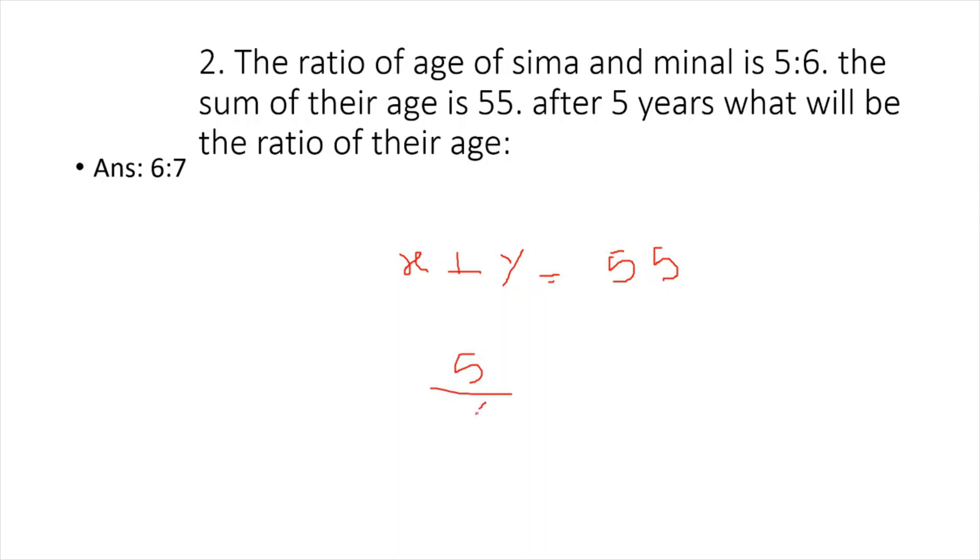The ratio is 5:6, and the addition is 55. Divide it in the ratio of 5:6, so it becomes 25 and 30. This ratio is 5:6. After 5 years, add plus 5 to both, so it becomes 30:35. The ratio comes out to be 6:7.